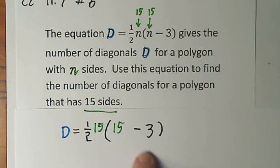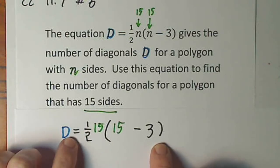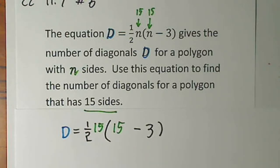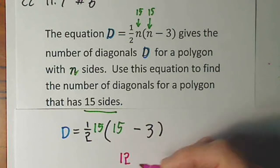This is an expression, one side of the equation. Take care of what's inside parentheses first: 15 minus 3 yields 12.